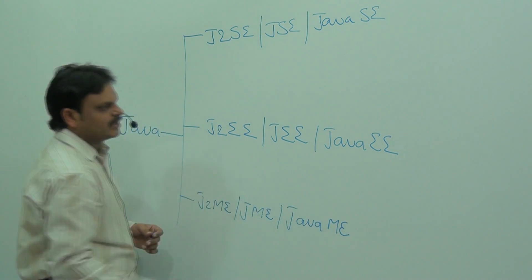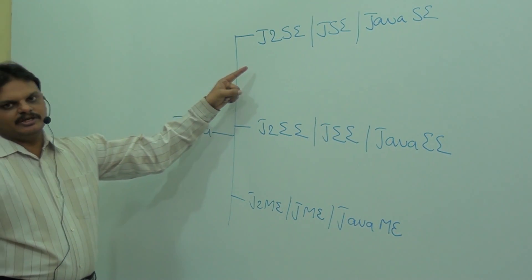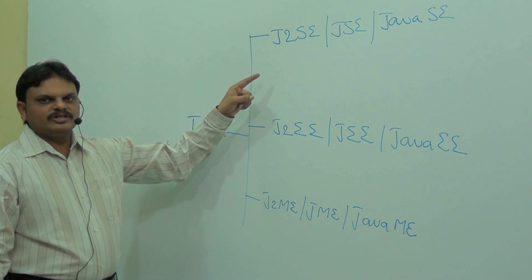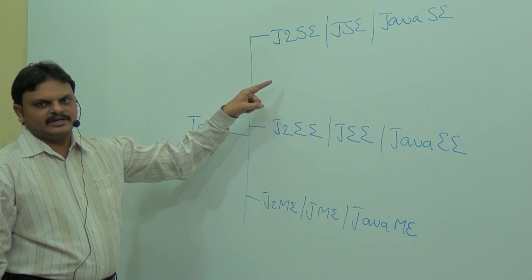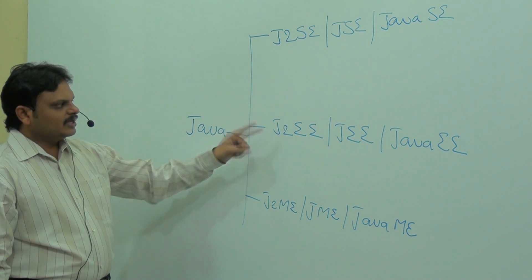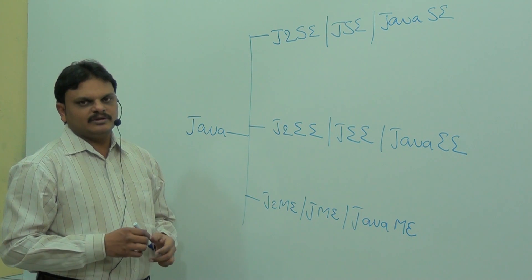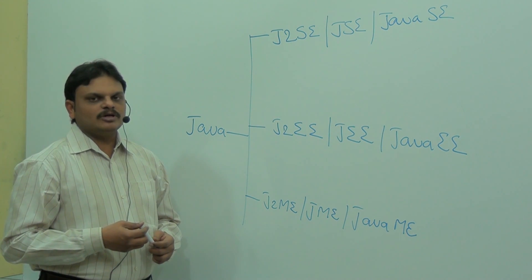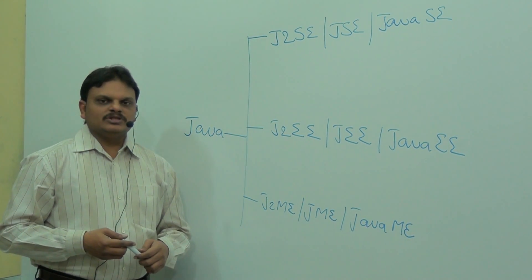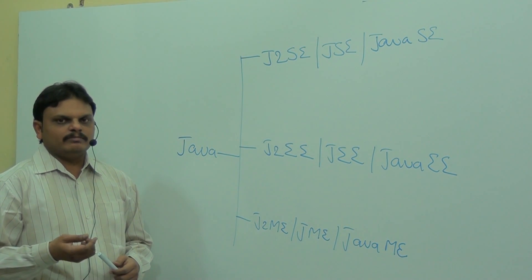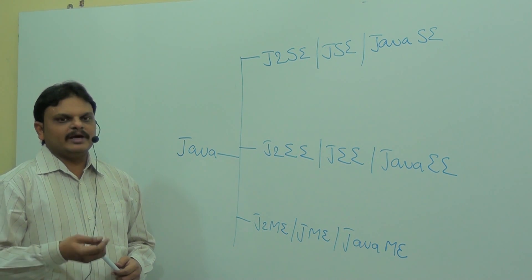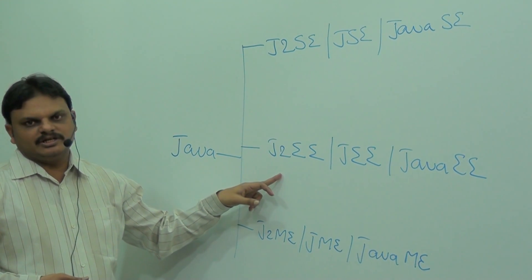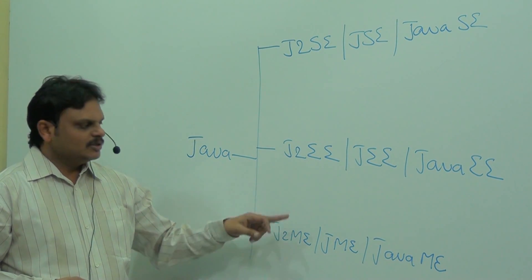J2SE — Java 2 Standard Edition — is mainly for designing standalone applications and to cover the fundamentals of Java technology. Next is Java 2 Enterprise Edition, which is mainly for enterprise application development, that means to cover server-side programming. Next is J2ME — Java 2 Micro Edition — whose main purpose is to cover micro programming. The best example is to prepare mobile and embedded software.